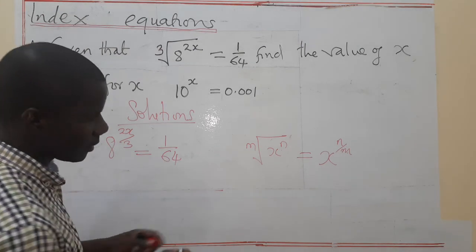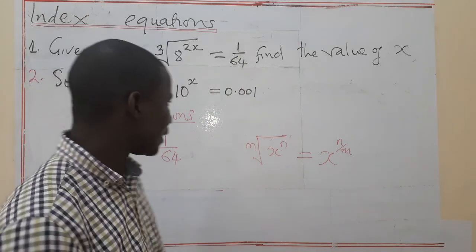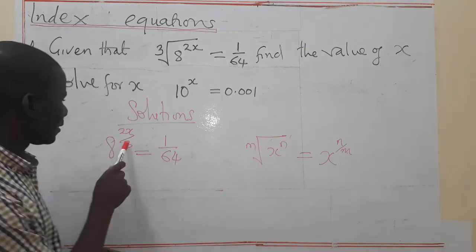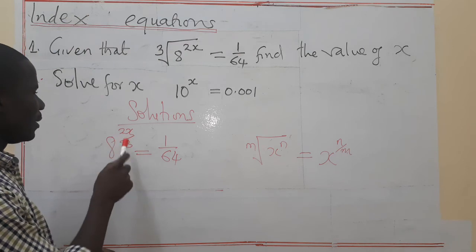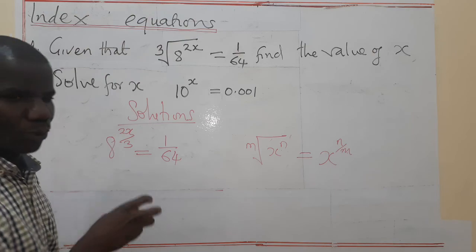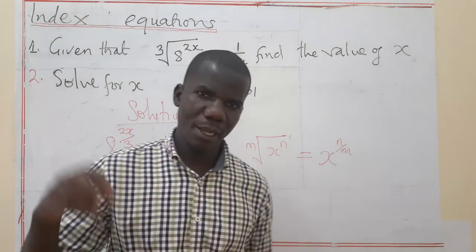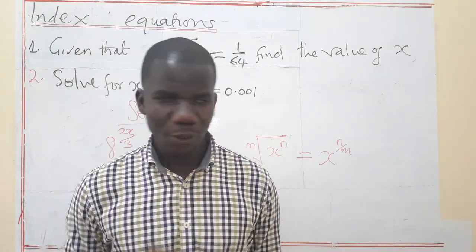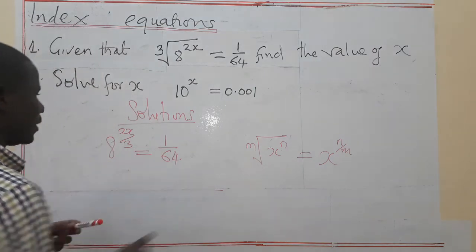So you are supposed to know that in this case, when the index is what we are looking for, the idea is that we should have a common base. Then when we get a common base, we are going to equate the indices.